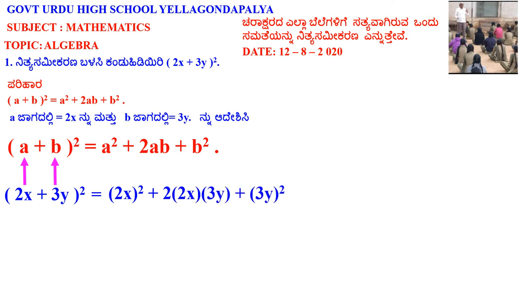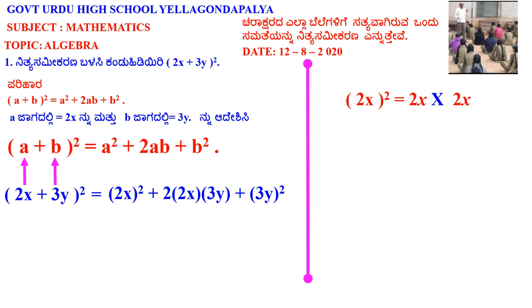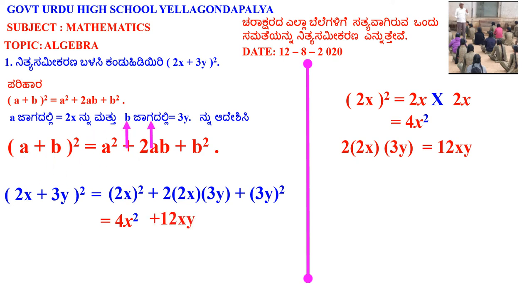2x into 3y plus b square is 3y square. This is 2x square. 2x into 4x gives 4x square. Then 2 into 2 is 4, and xy. That gives 9y square.